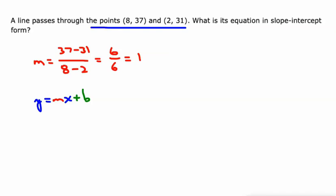So here we go. Let's use (8, 37). So 37 equals 1 times 8 plus b.